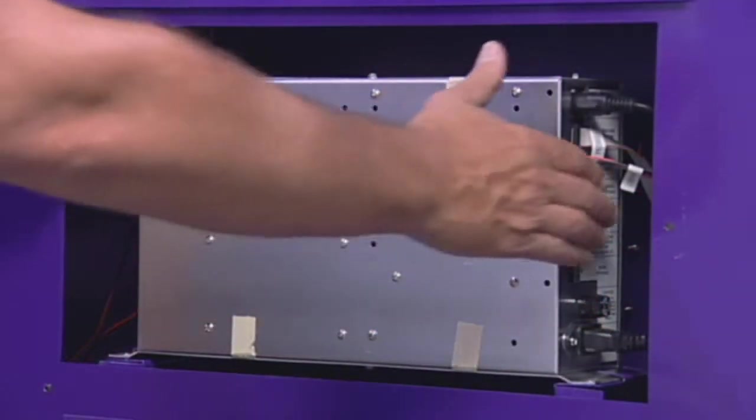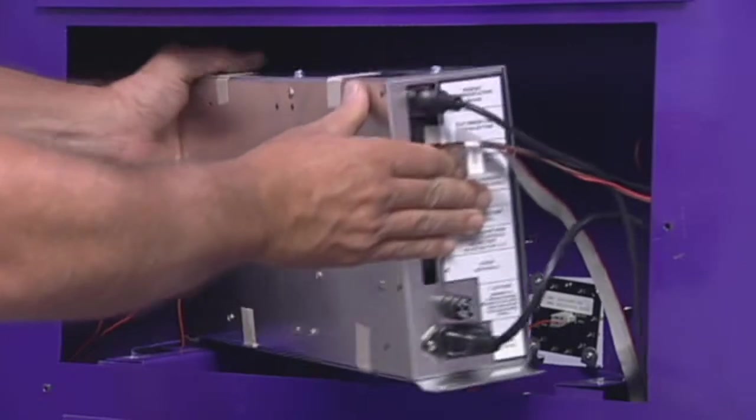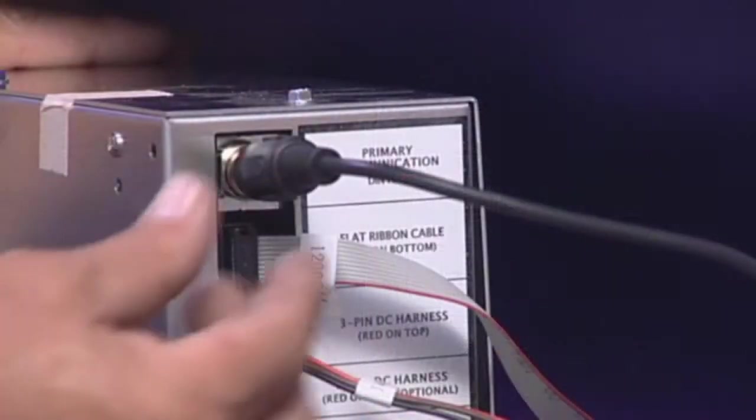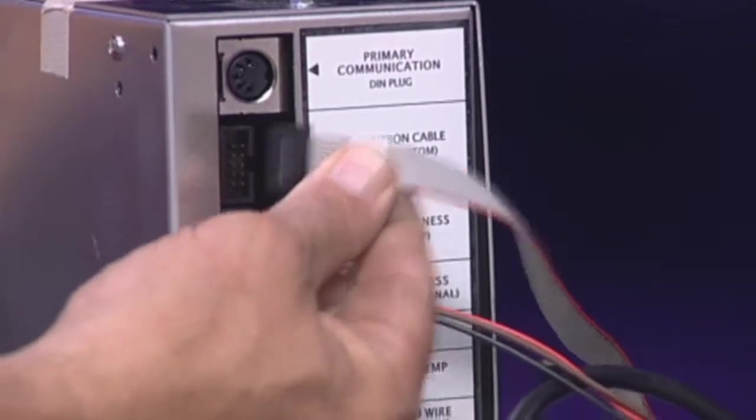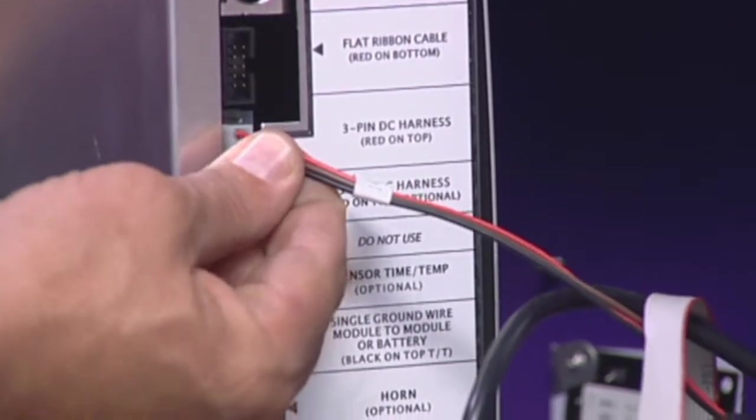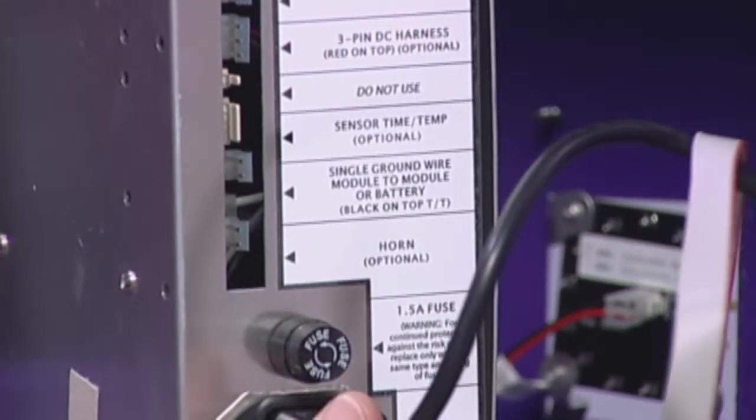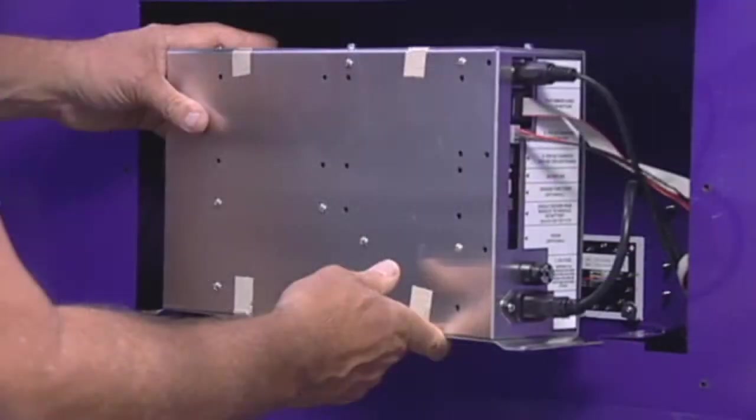The module is the computer and power supply for the entire scoreboard. Replacing the module is straightforward and relatively easy as long as you have a few basic tools and a safe way to reach and open the access panel on your scoreboard.